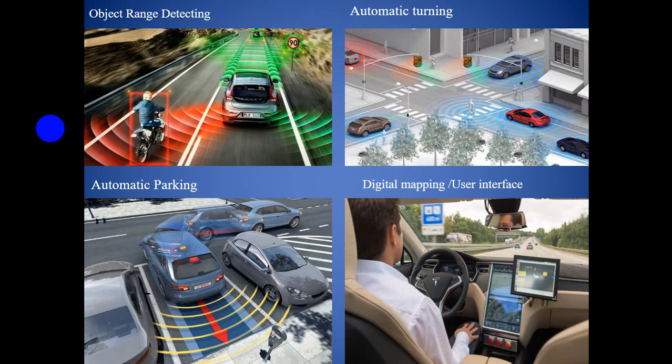These figures show the driverless vehicle on the road. The first figure is the laser detection system, the second is the automatic turning system, the third is the automatic braking system, the fourth is digital mapping, and the fifth is the user interface where we can input our destination and the vehicle will move accordingly.